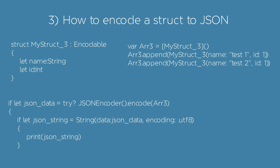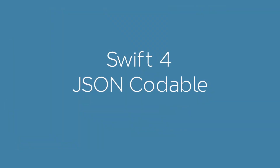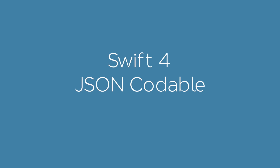To encode a struct into a JSON object, you'll have to define your custom Encodable struct. Everything is then done by the new Swift functionality. In the video description, you can find the Swift Playground project with the three different examples.